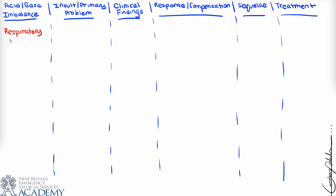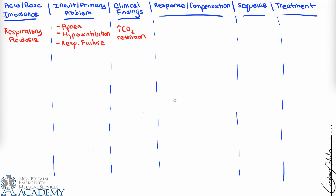Respiratory acidosis usually occurs as a result of some type of respiratory problem such as apnea, hypoventilation, or respiratory failure — breathing that is too slow, not happening at all, or generally inadequate for good oxygenation and tissue perfusion. If we're not ventilating well, we can have an increase in CO2 retention, meaning CO2 that would normally be exhaled is sitting in the alveoli, reducing the gradient for CO2 movement across the capillary endothelium.